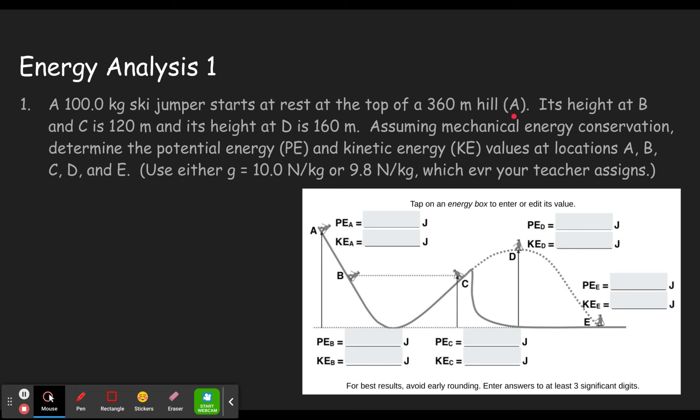Its height at B, so here's B, and C. C is at the same height, this number 120 in this case, and its height at D is 160. So that's D here and then at E there at the ground. So that would be a height of zero. Dotted line here is usually what we use to indicate our frame of reference, in other words our zero point.